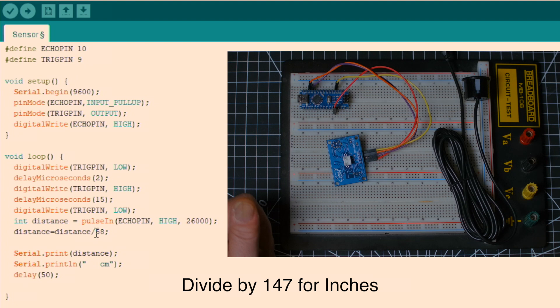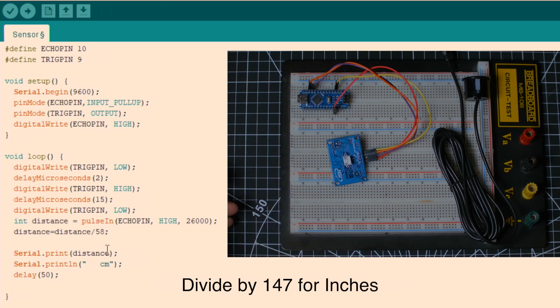And the distance is equal to distance divided by 58. And then on the serial monitor we will print the distance in centimeters and wait for 50 milliseconds until we redo another ping and read this value again. So there you go, that's the code.